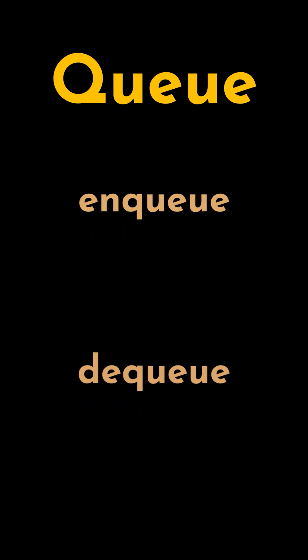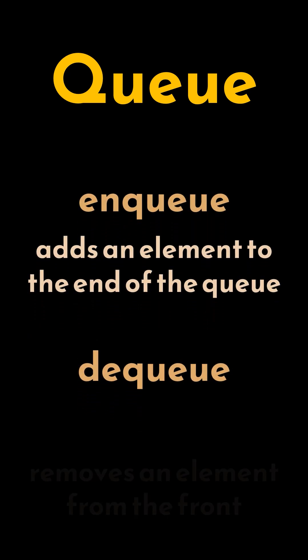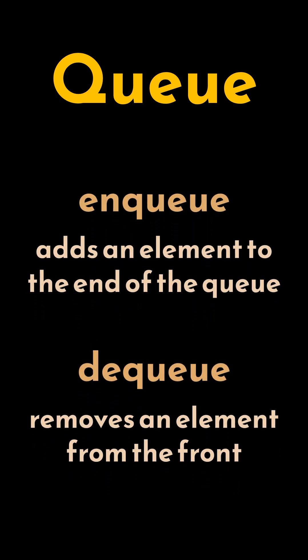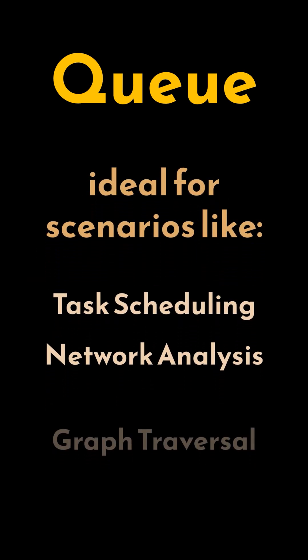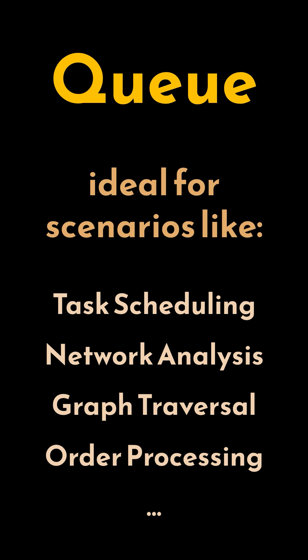A queue allows two main operations: Enqueue and Dequeue. Enqueue adds an element to the end of the queue, while Dequeue removes an element from the front. These operations ensure that items are processed in the order they arrive, making queues ideal for scenarios like task scheduling, order processing, breadth-first search in graph traversal algorithms, and more.